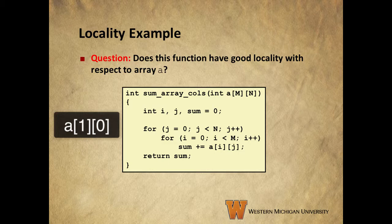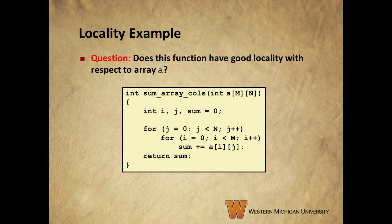then a[1][0], a[2][0], a[0][1], a[1][1], a[2][1], etc. This ends up being a stride n reference pattern, so we're skipping around the vector in memory and referencing elements that are a distance of n apart, rather than referencing them in order. This does not give us good spatial locality with respect to a, like the function in the last slide did.